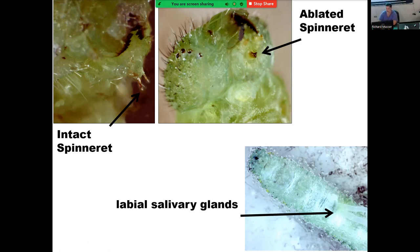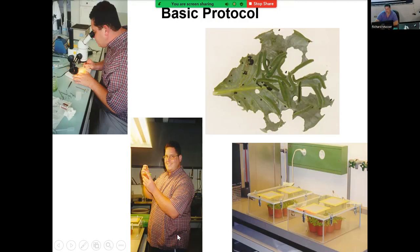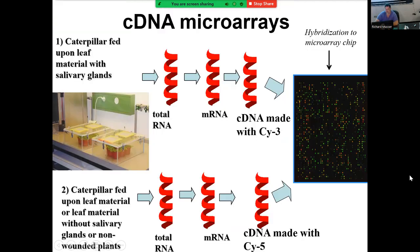We put the caterpillars on the Arabidopsis plants and got some results. We had plants wounded with and without salivary glands, purified the RNA just like in the cartoon, then purified the messenger RNA, made a complementary DNA strand, and labeled it either green or red. The green color is Cy3 and the red color is Cy5.